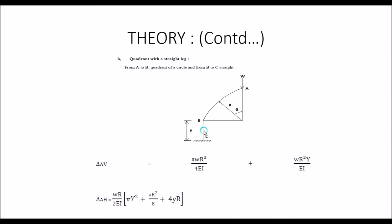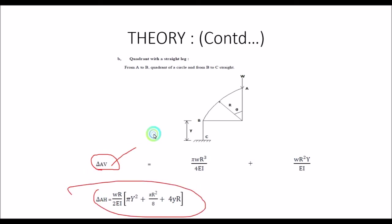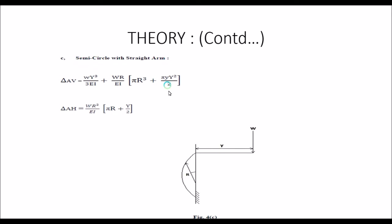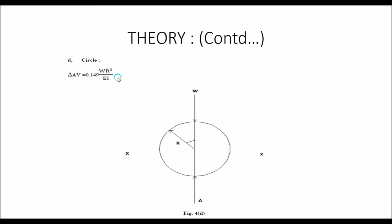For the quadrant with straight leg, you calculate the displacement using the same variables. Similarly for the semi-circle with straight leg, you calculate by measuring the relevant lengths and cross-section. For the full circle, if a vertical load is applied, there will be only vertical displacement, calculated as 0.149·W·R³ / (EI). You calculate all these values theoretically first, then measure them in the lab.